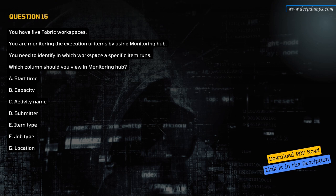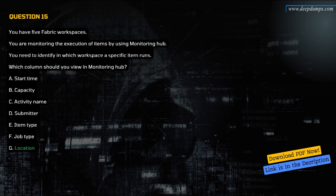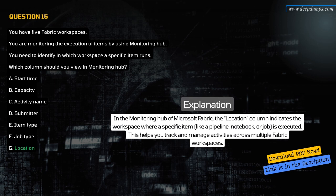Question 15. You have five Fabric workspaces. You are monitoring the execution of items by using Monitoring Hub. You need to identify in which workspace a specific item runs. Which column should you view in Monitoring Hub? A. Start time. B. Capacity. C. Activity name. D. Submitter. E. Item type. F. Job type. G. Location. The correct answer is G. Location. In the Monitoring Hub of Microsoft Fabric, the Location column indicates the workspace where a specific item — like a pipeline, notebook, or job — is executed. This helps you track and manage activities across multiple Fabric workspaces.